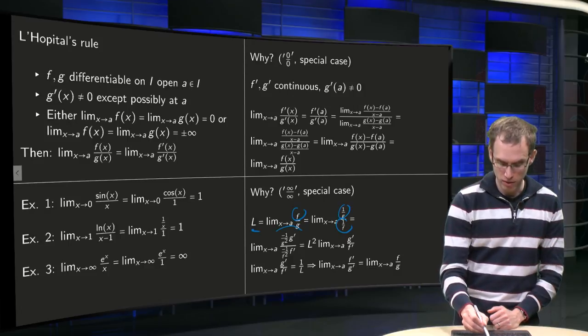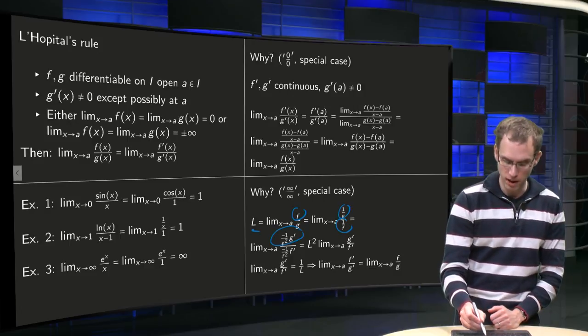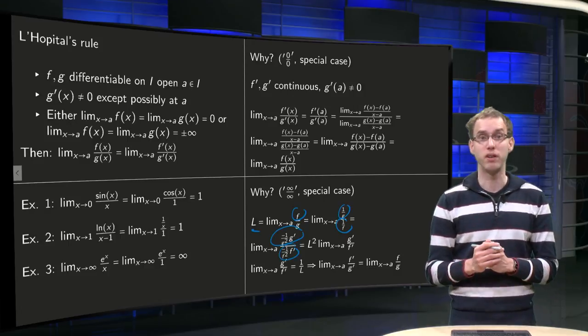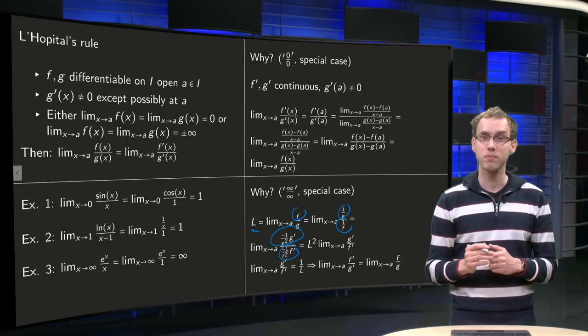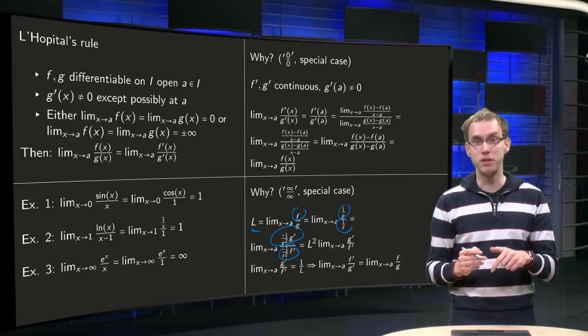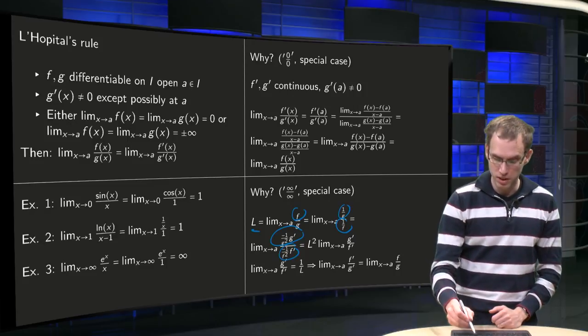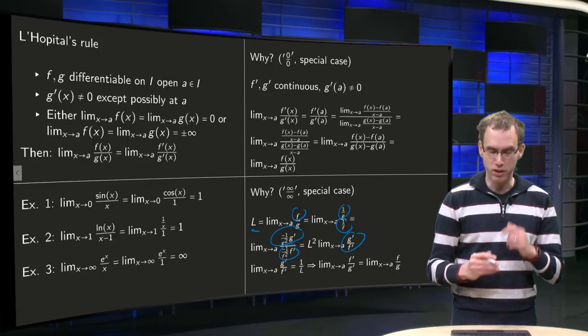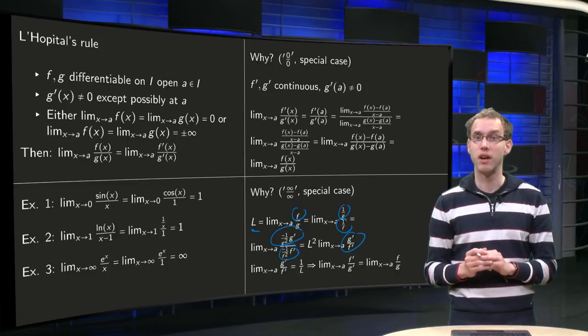Then we get a minus 1 over g squared times g' divided by minus 1 over f squared times f' which simplifies to f squared over g squared times f' over g'.